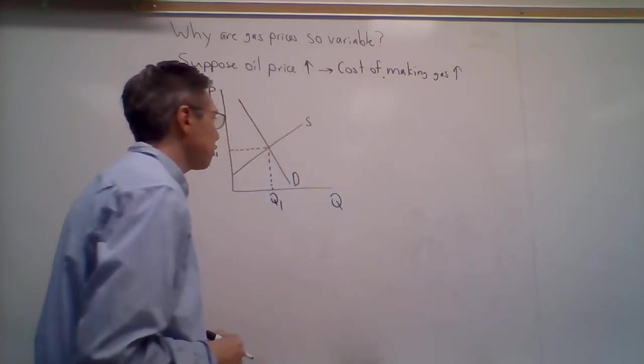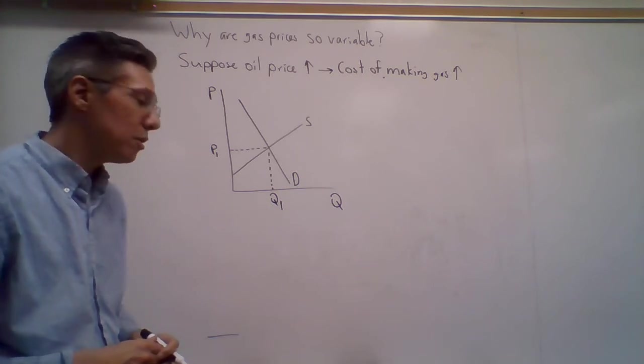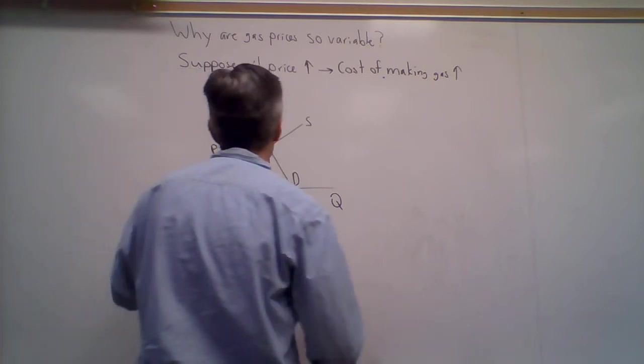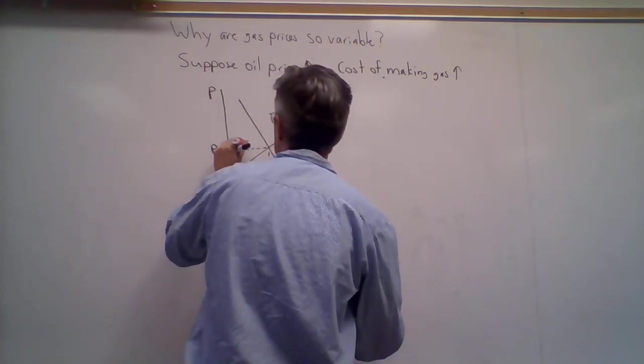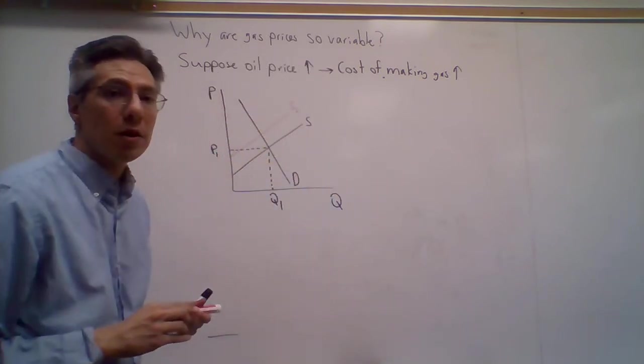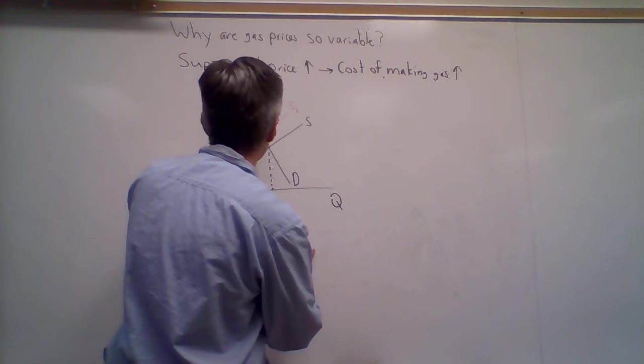So I've drawn our graph and basically it has its initial equilibrium. Now to incorporate this increase in cost, we basically get the following: the supply shifts to the left.